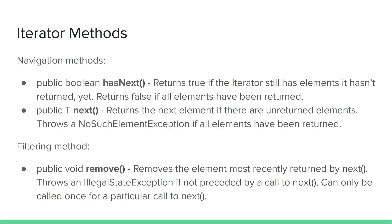These are the three standard iterator methods. Regardless of what exact collection is being navigated — whether it's a set, a stack, a list, a queue, or some kind of tree — these are the three methods that any iterator will provide so that you can navigate in a standardized way regardless of organization.